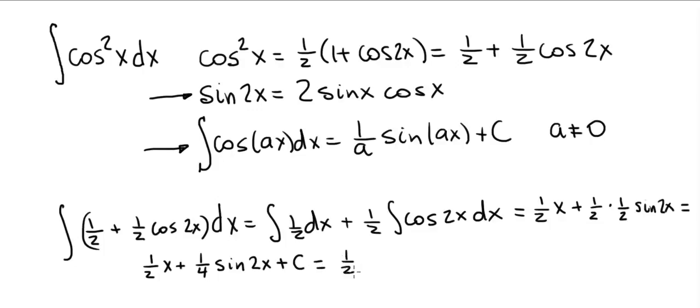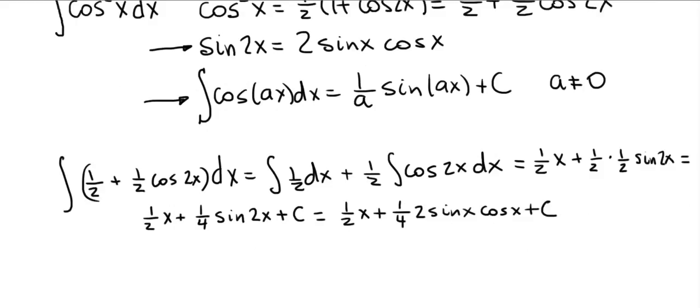So this can be rewritten as 1 half x plus 1 fourth. And instead of sine of 2x, we'll replace it with 2 sine x cosine x plus c. And finally, we have our answer.